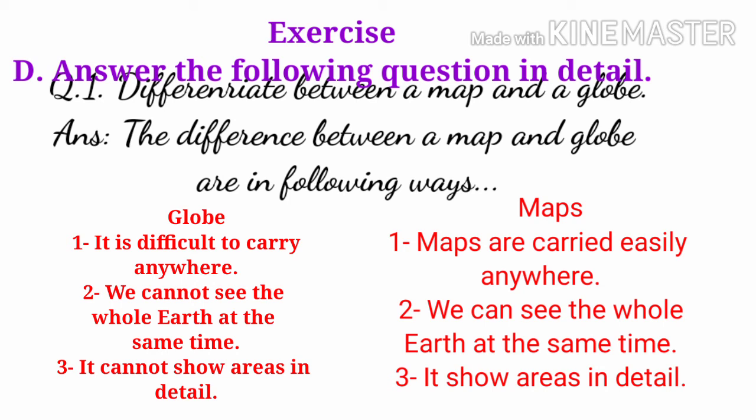Now write question number one: Differentiate between a map and a globe. Write the answer from the next line. The difference between a globe and a map is as follows. Globe: it is difficult to carry anywhere. Map: maps are carried easily anywhere. Map: we can see the whole earth at the same time on a globe.